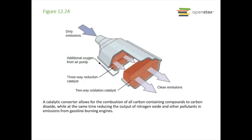Here's the catalytic converter: dirty emissions go in and clean emissions come out. It has a few different catalysts — oxygen from an air pump, a three-way reduction catalyst, and a two-way oxidation catalyst — and then clean emissions come out the tailpipe. This is why you have to get your car smogged and check those emissions. Make sure your catalytic converter is working well — they're very expensive.